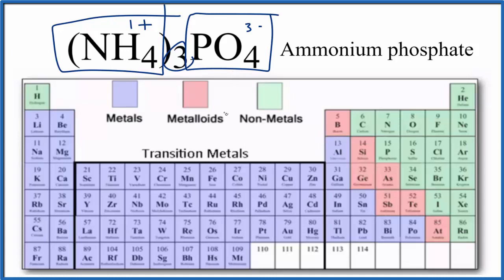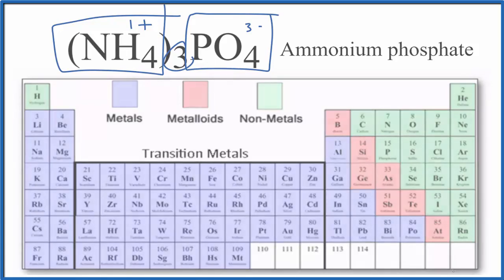This is Dr. B, answering the question whether NH43PO4 is ionic or covalent. It is an ionic compound, but the polyatomic ions themselves, they have covalent bonds. Thanks for watching.